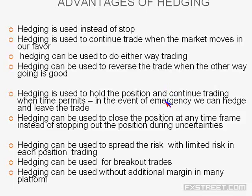Hedging can also be used to reverse the trade — simply cut the sell or buy position and continue with the profit-making position. It can be used in an emergency: if you need to attend to other work, hedge the position with a market order, attend to your work, come back and review. If the hedging shows a loss and the original position shows profit, cut the hedging with a 70-pip loss; once the original moves up another 30 pips you earn profit. You incur only a nominal 30-pip acceptable loss.